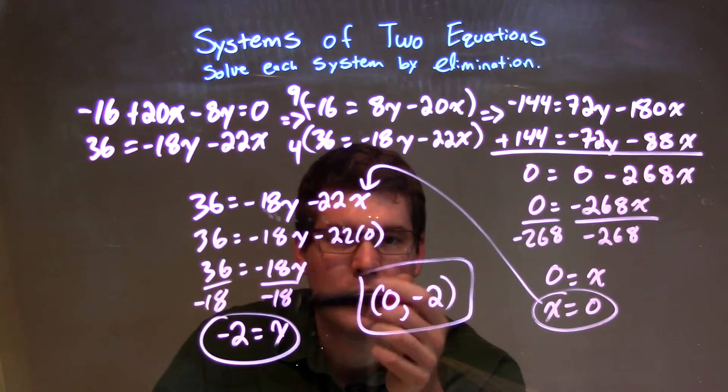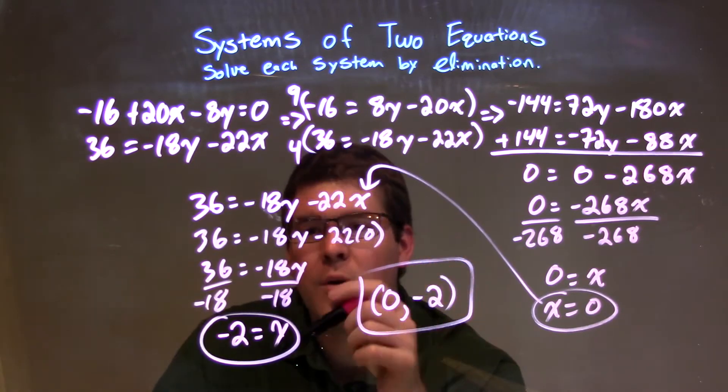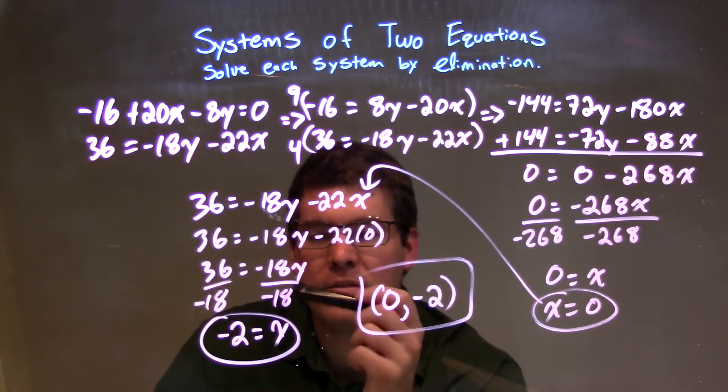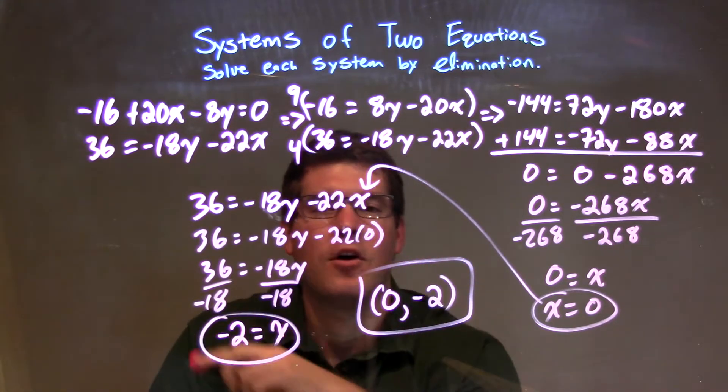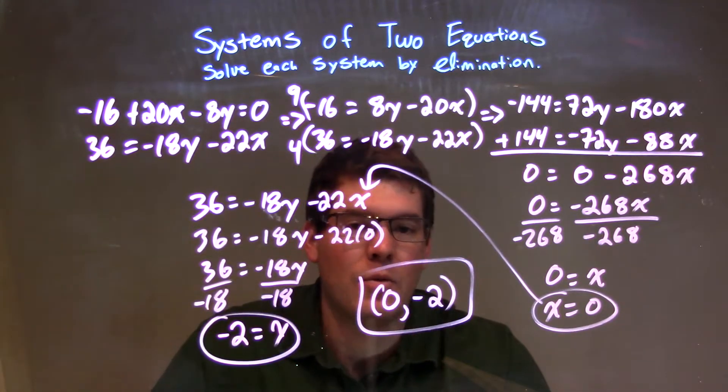Negative 22 times 0 is just 0. Don't worry about that. Divide by negative 18 on both sides gives me y equals negative 2. So again, our final answer, solving by elimination, is 0, negative 2.